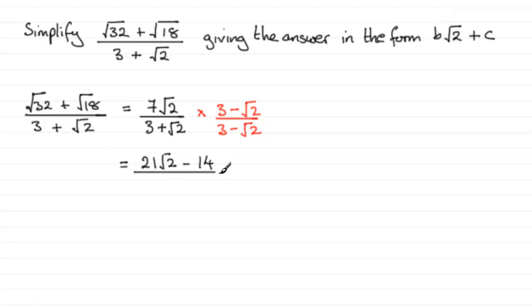And then on the bottom here, we're going to have 3 times the 3, which is 9. Then we're going to have 3 times minus root 2, which is minus 3 root 2. And then we start with the root 2 multiplied by 3, so that's plus 3 root 2. And then finally we've got plus root 2 multiplied by minus root 2, which is going to be minus root 2 times root 2 is just simply 2.